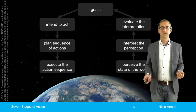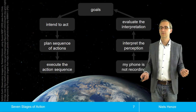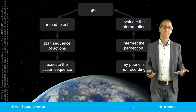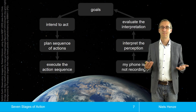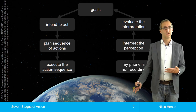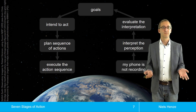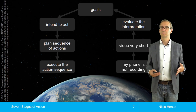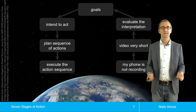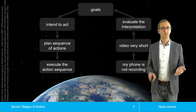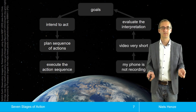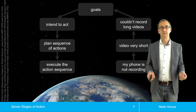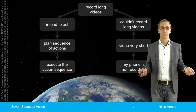Looking at a concrete example: let's assume my phone is not recording. I used to use my phone to record lectures, and at one point it didn't properly record videos anymore. I went back to the camera after a talk and realized the phone wasn't recording. I tried to understand that — I noticed the videos were very short, maybe 20 seconds. So it recorded something, but too short for a lecture. I realized I couldn't record long videos and derived the goal that I want to record long videos.